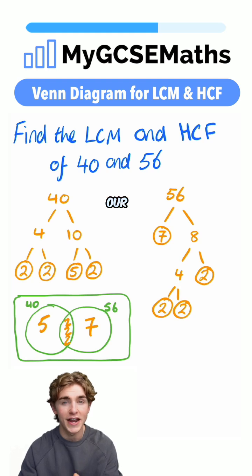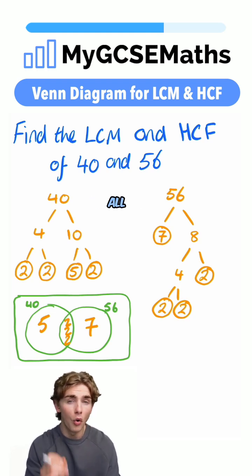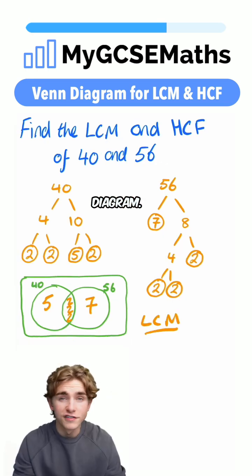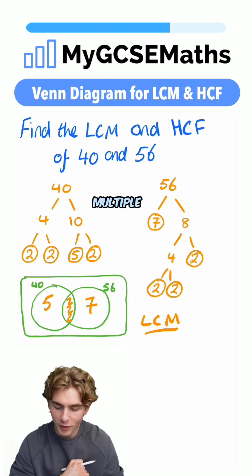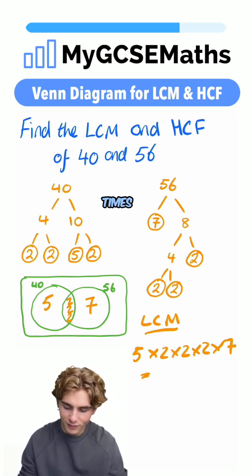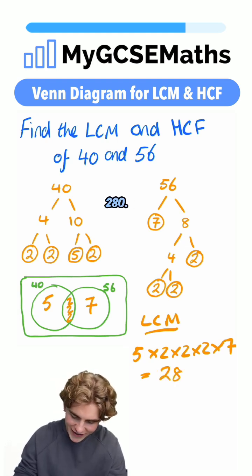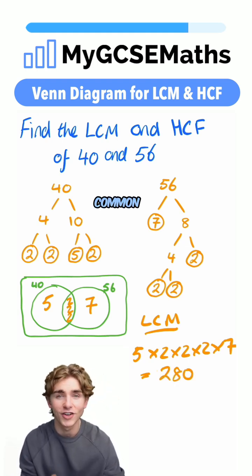Now, how are we going to do it? In order to find our lowest common multiple, we're going to multiply together all of the numbers in our Venn Diagram. So we can say that our lowest common multiple is going to be equal to five times by two times by two times by two times by seven. Multiplying those together, two times two times two is eight times five is 40 times seven. We're going to have 280.